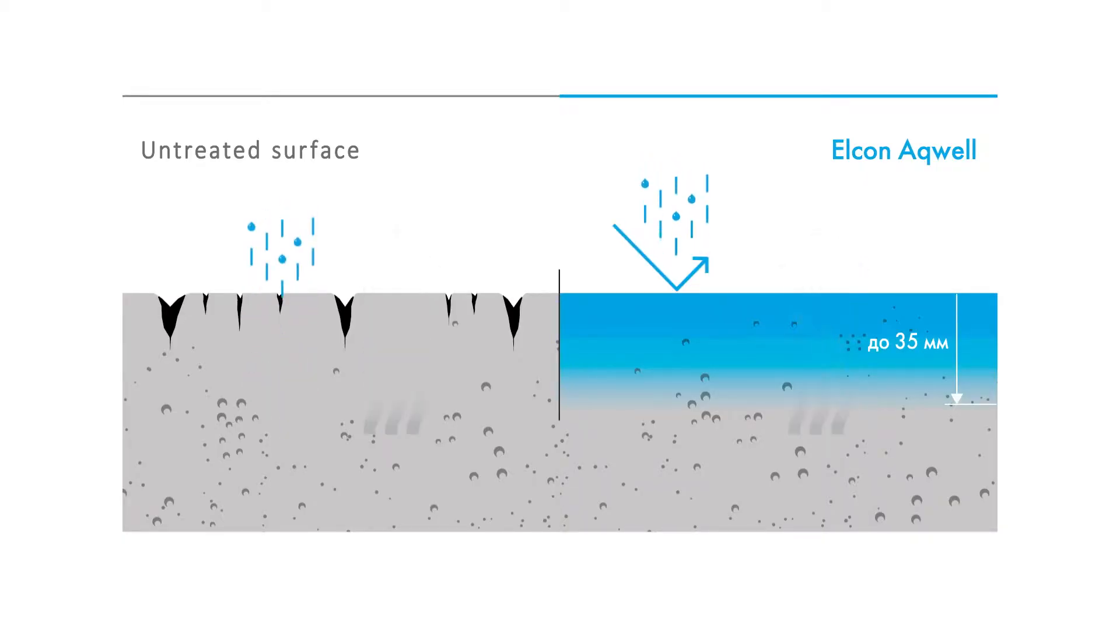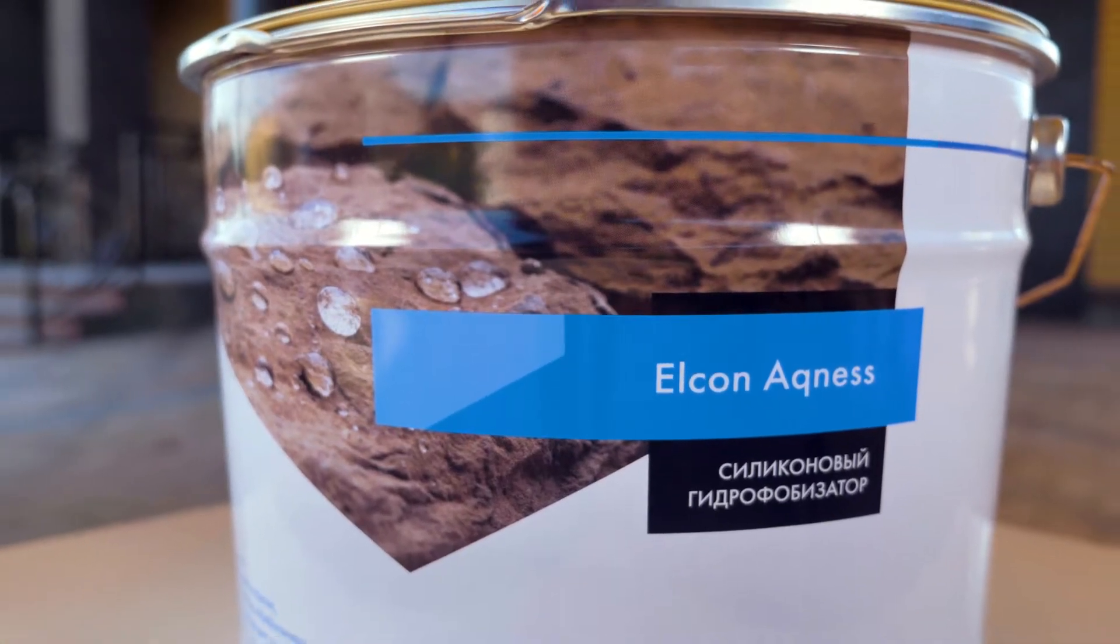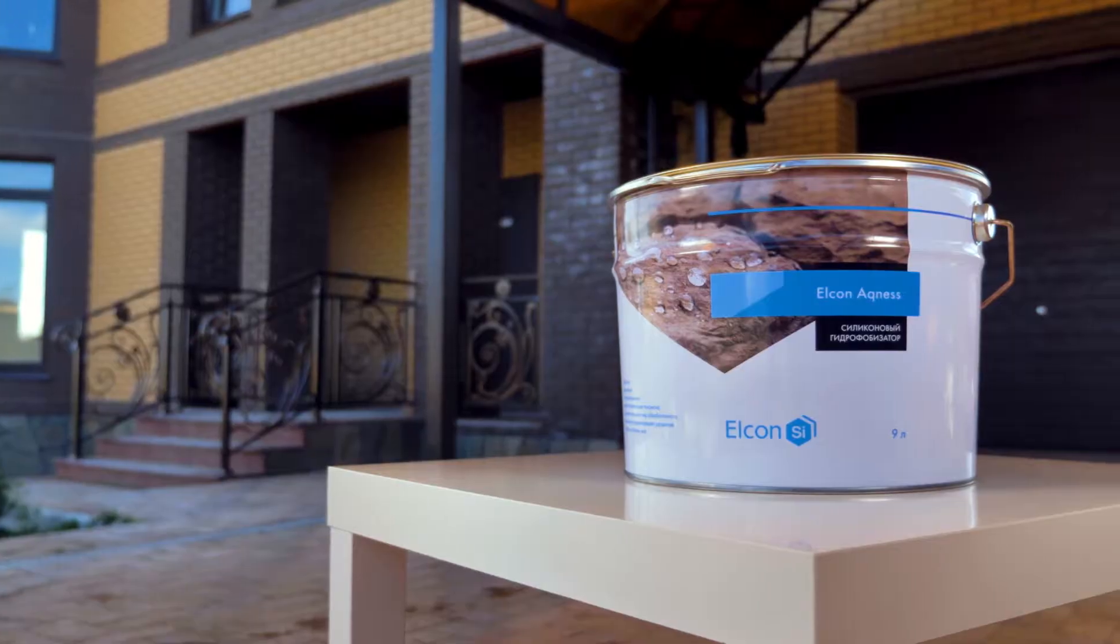The water repellent penetrates to a depth of 35 millimeters, creating a layer of high moisture resistance. Water repellent and vapor permeable properties of the coating are due to the mesh structure of the silicone film. The impregnation solution protects surfaces from getting wet and cracking.